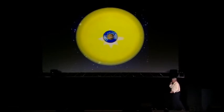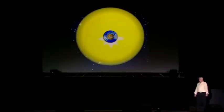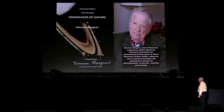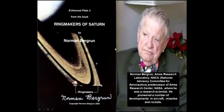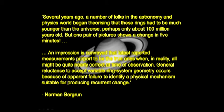Saturn, when described pre-cataclysmic, didn't have visible rings — so where did they come from? Norman Bergeron, who has a long history in space research going way back, had his life changed when he studied the pictures that came back from the Voyager 1 and 2 expeditions to Saturn, which arrived in 1980-81. In his book 'The Ringmakers of Saturn,' he noted that physicists began theorizing the rings had to be much younger than the universe — perhaps only about 100 million years old.